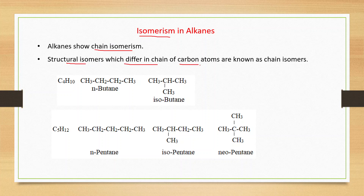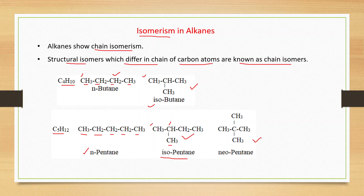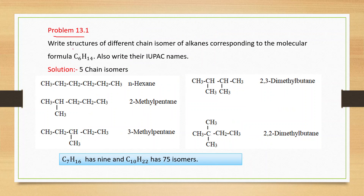Now, isomerism in alkanes. Alkanes show chain isomers. Structural isomers which differ in the chain of carbon atoms are known as chain isomers. For example, C4H10 represents two compounds: normal butane. C5H12 has three isomers: normal pentane CH3CH2CH2CH2CH3, isopentane — with four atoms in the parent chain and a branch at the second position — and neopentane.